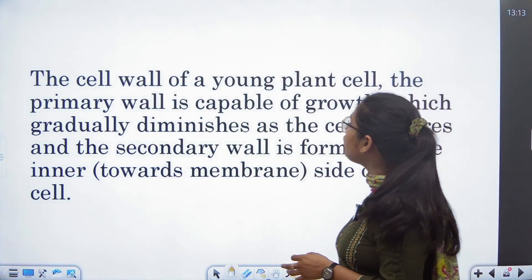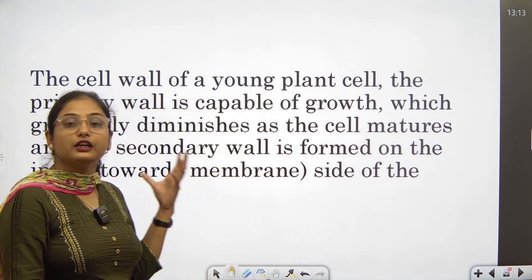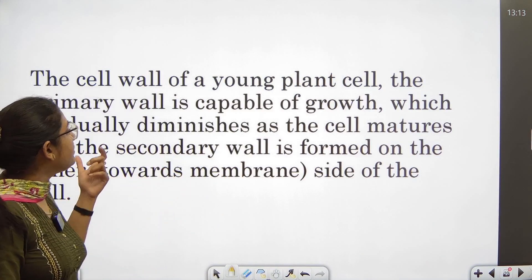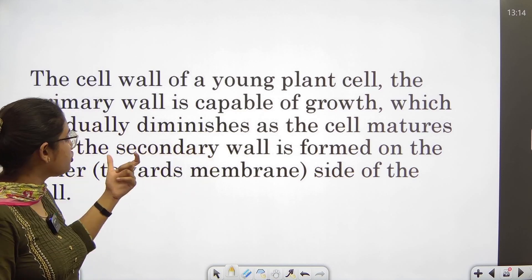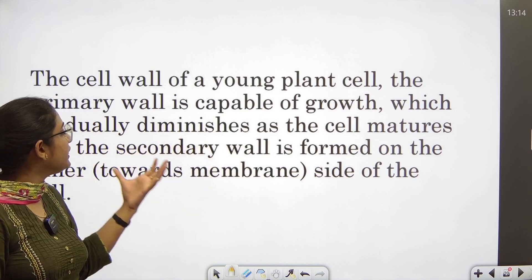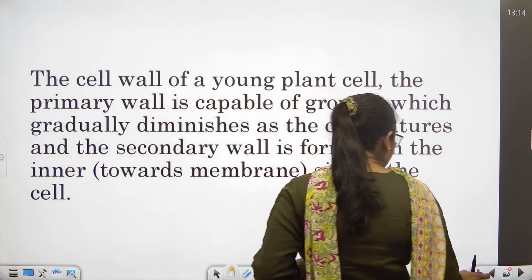The cell wall of a young plant cell, the primary wall is capable of growth, which gradually diminishes as the cell matures and the secondary wall is formed on the inner towards membrane side of the cell. Now, let me explain you the situation.